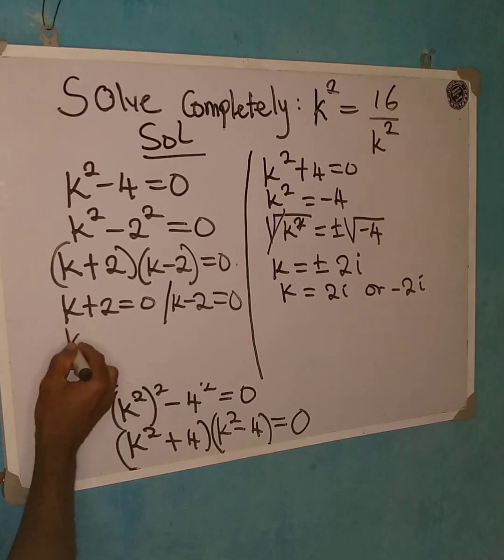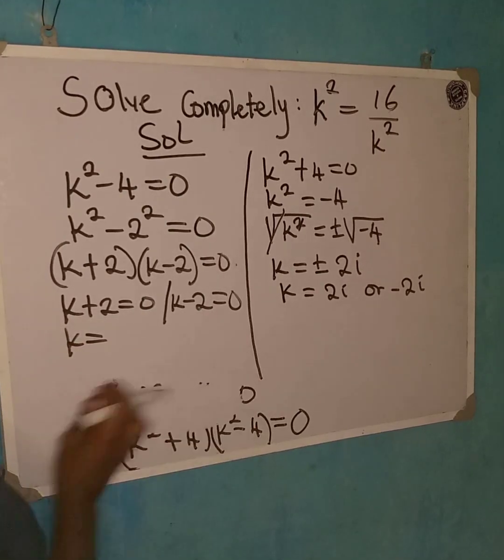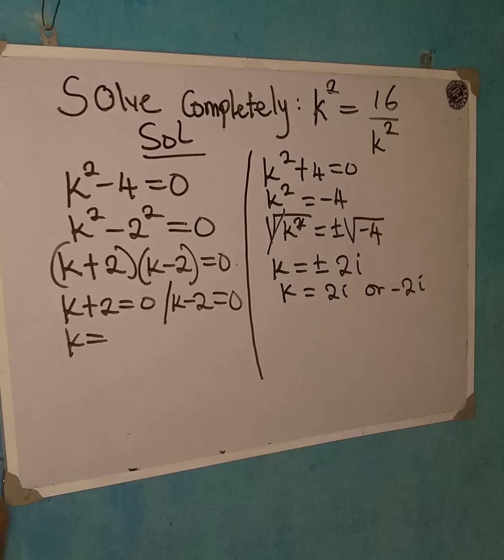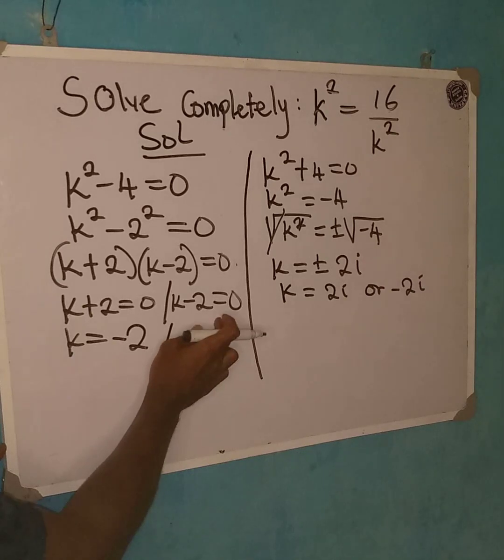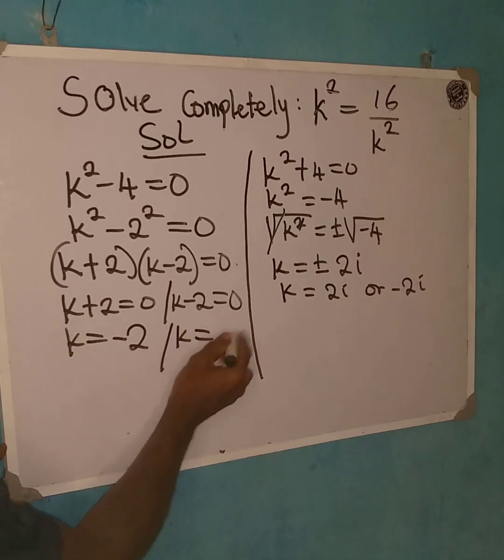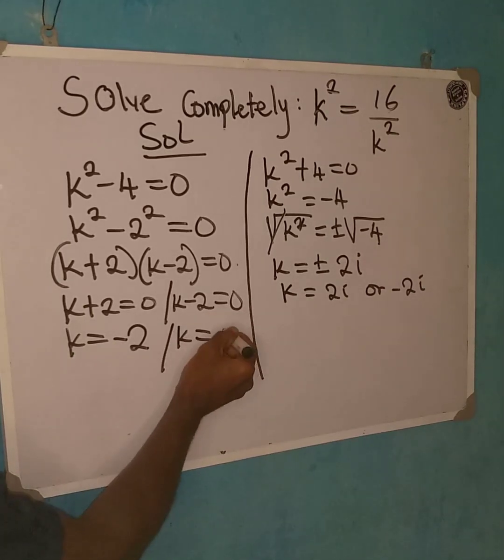From this side, k will be equal to 0 minus 2, and that will give us minus 2. Or on this other side, k will be equal to 0 plus 2, and that will give us plus 2.